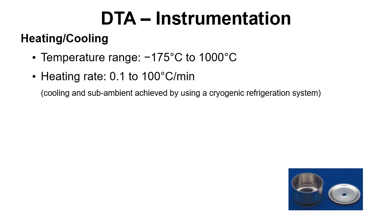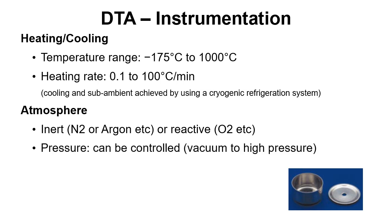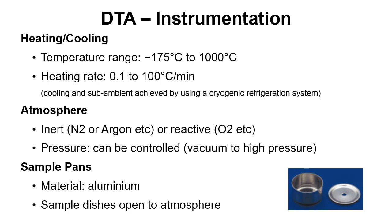If we want to go to those cryogenic temperatures of minus 175 degrees, then we need a cooling system to be able to get down to those cold temperatures. The atmosphere can be inert, such as nitrogen or argon, or it can be reactive, such as oxygen. The pressure can be controlled, ranging anywhere from vacuum to high pressure, which is an advantage for DTA not normally available with DSC. Sample pans are normally aluminium and the dishes are open to the atmosphere, so if there is any decomposition the gases can leave, and it also allows a reactive atmosphere to interact with the sample material.